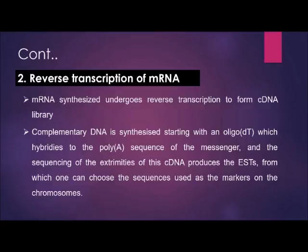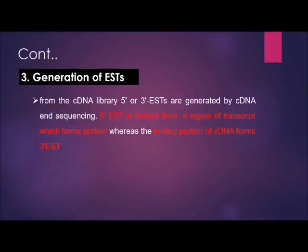The second step is the reverse transcription of mRNA to cDNA. The produced mRNA undergoes reverse transcription to produce cDNA, which is then cloned to create a cDNA library. The cDNA is synthesized starting with an oligo that hybridizes to the poly-A sequence of the mRNA. Sequencing of the extremities of the cDNA produces the EST, from which one can choose the sequence used as a marker on the chromosome.